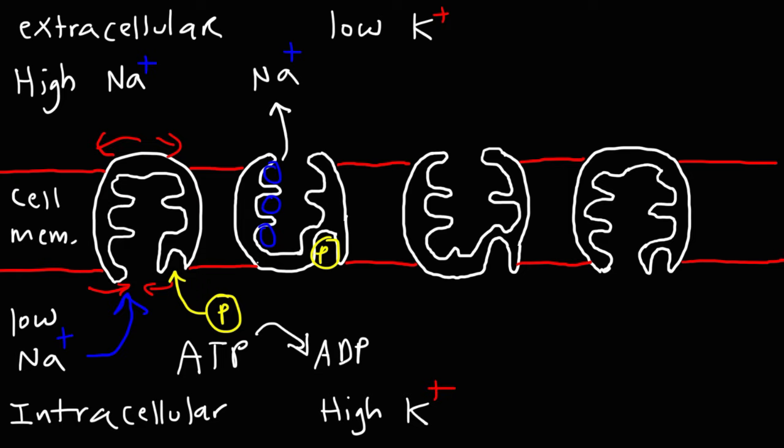As the three sodium ions leave, two potassium ions will enter the pump — highlighted here in purple. So here are the two potassium ions, and we still have a phosphate group.